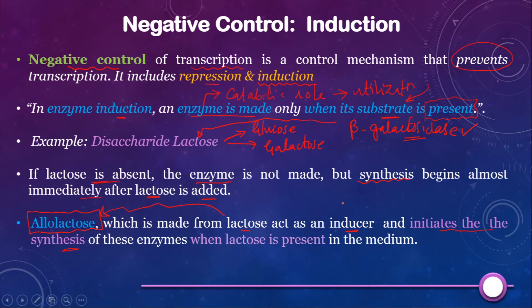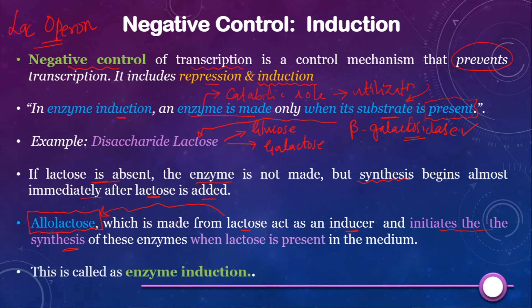An inducer is needed because the transcription of the lac operon is involved. By default, the lac operon is always switched off — it is negatively regulated. Whenever lactose is present in the medium, it gets converted to allolactose, and allolactose induces the lac operon to start transcription of the genes involved in lactose catabolism. This happens only when lactose is present in the medium. In this mechanism there is also an involvement of a repressor protein to prevent transcription, so the induction mechanism is also under negative control.